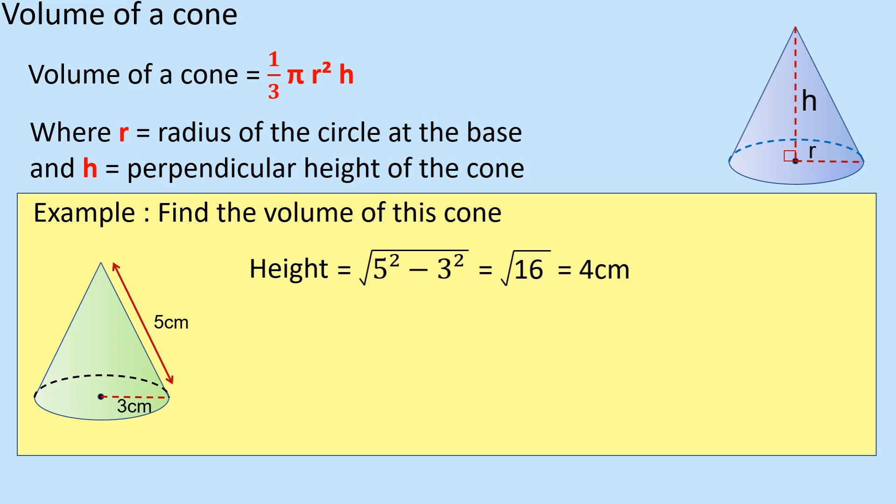Your next step is then just using the formula. So it's going to be one-third times π times 3², with the radius of 3, times the height, which is now 4. So one-third times π times 3² times 4, which is 37.7 centimeters cubed.